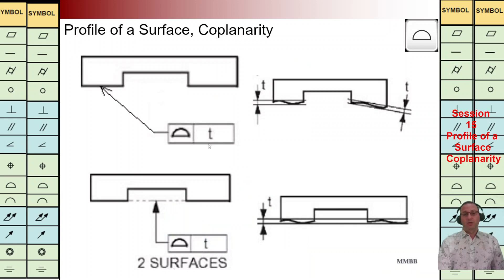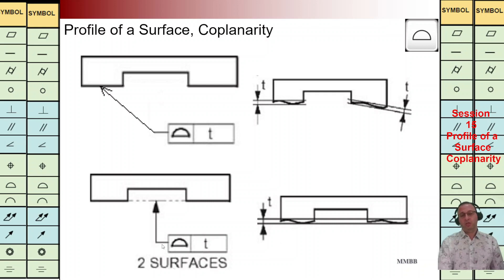If I'm going to highlight just one surface, as we can see here at the top, we are going to control just that surface. If I refer to just this one surface, we are going to control the shape of that surface. But whenever we write, for example, two surfaces — or 2× this feature control frame — we are going to control both of them at the same time. Based on the mid-plane, we are going to make two parallel surfaces, and these two wavy surfaces should be in that tolerance zone.